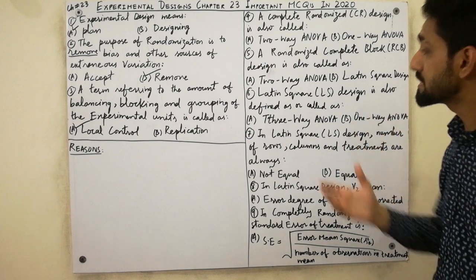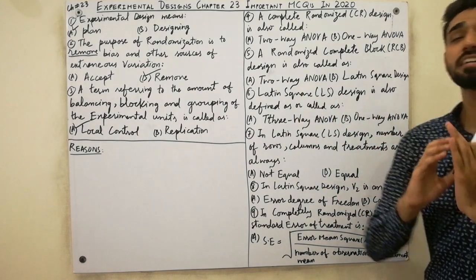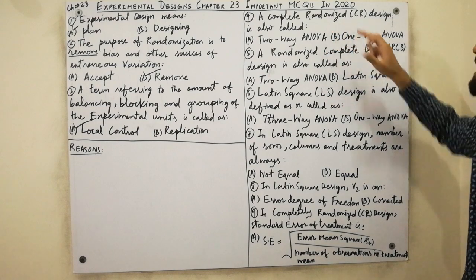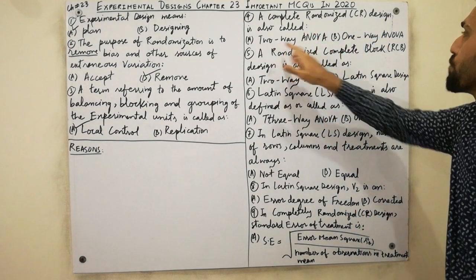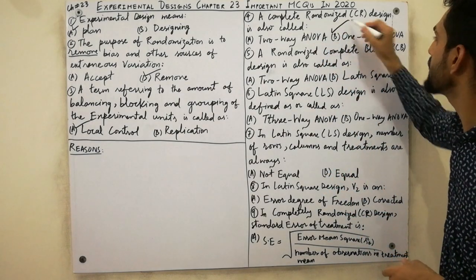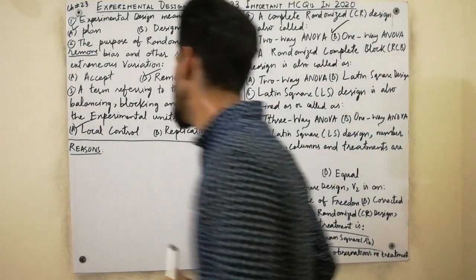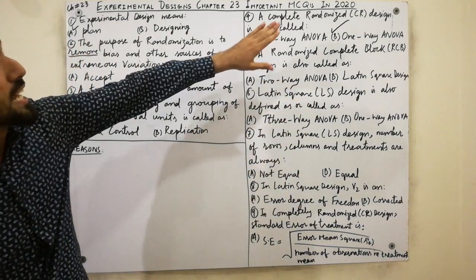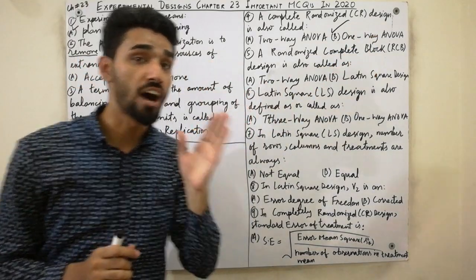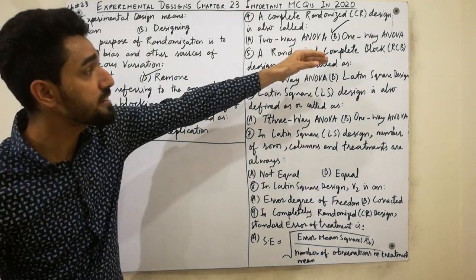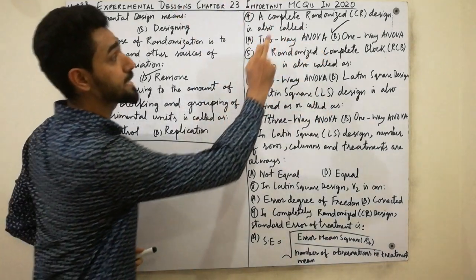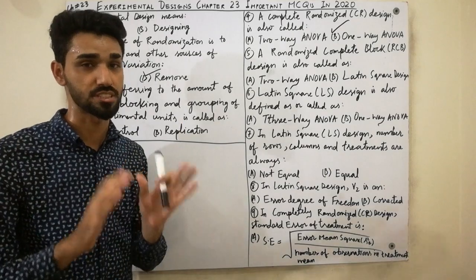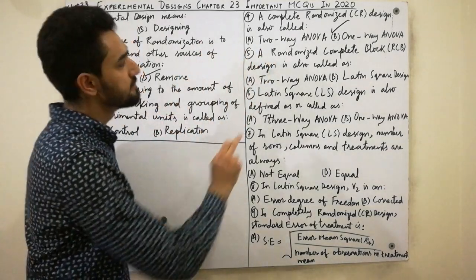The fourth MCQ is very important. Completely Randomized Design, also known as CRD, is also called one-way ANOVA. Must remember: one-way ANOVA method is used in completely randomized design — they have the same method and same calculations. Completely randomized design is also called one-way ANOVA.